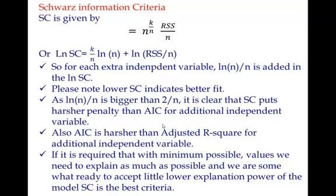So if your requirement is to have minimum possible variables—you need to explain as much as possible and you really sincerely want to have as small a number of variables as possible—there may be cost of using that or whatever, then you should go by Schwarz criteria. However, if you can afford a little more variables and AIC reduces further, you may think of AIC if you are not necessarily really wanting minimum variables but you are ready to compromise a little bit on addition of extra variables.